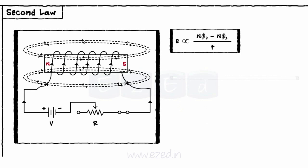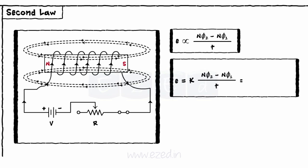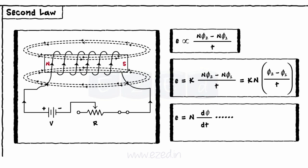Now, as per the first law, the EMF will be induced. And as per the second law, it will be proportional to the rate of the change of flux. Hence, E equals N into K into d phi by dt. If K equals 1, then E equals N d phi by dt.